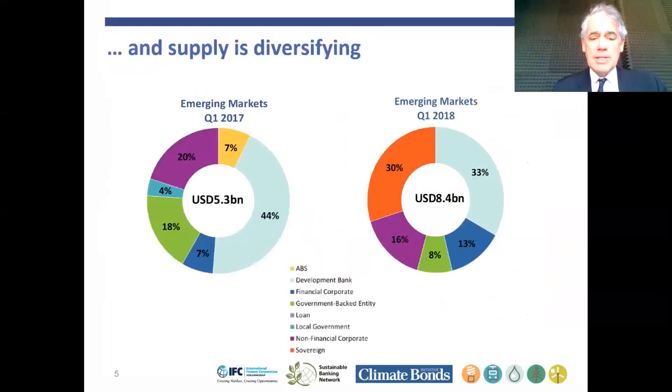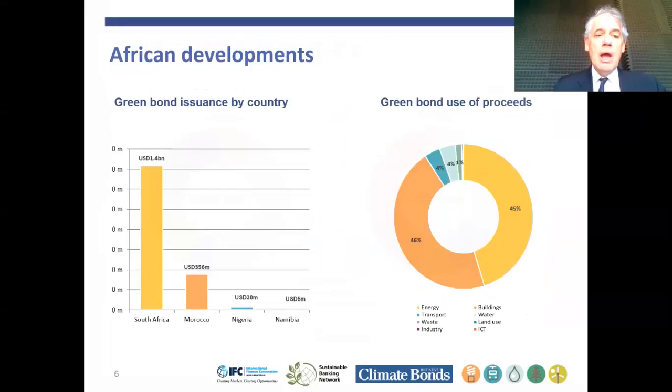In emerging markets, we've had a bit of growth in the last couple of years and a change in the kinds of issuers. We've now seen 30% of issuers out of emerging markets. In Africa, we've seen the biggest issuance from South Africa. Morocco, led by the Capital Markets Authority, have been notable in pioneering the market in Africa. We've seen a sovereign out of Nigeria and recently issuance out of Namibia. This is dominated by green buildings and energy in Africa.